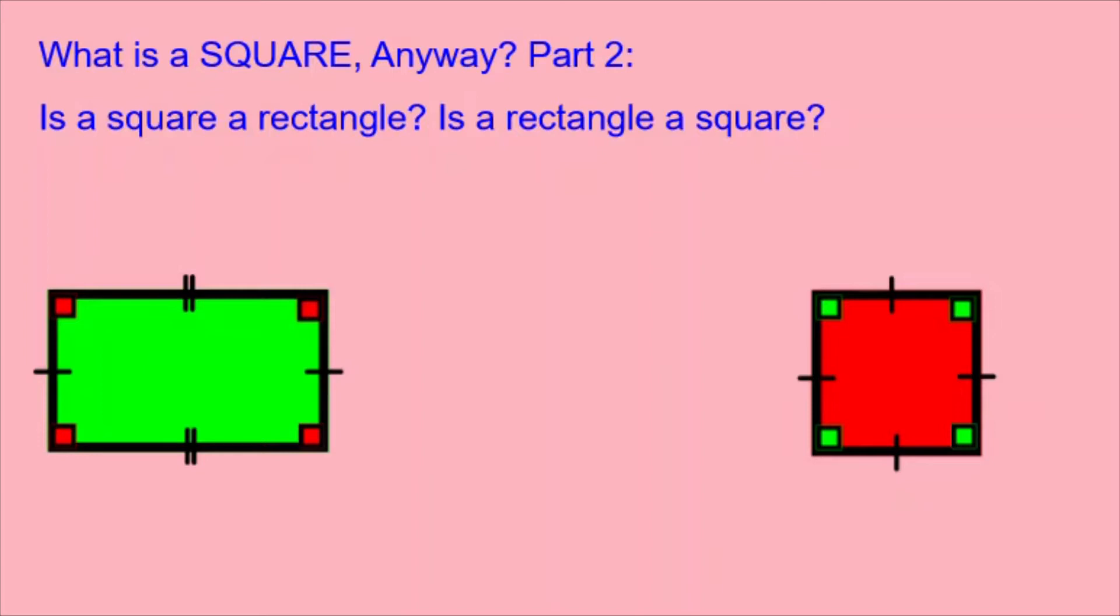In part one, we talked about the basic facts about a square, and we looked at the definition of a square. But now in part two, we're asking the question, is a square also a rectangle? And is a rectangle also a square?